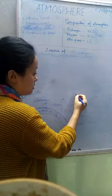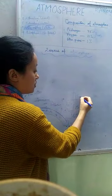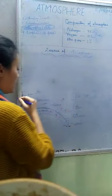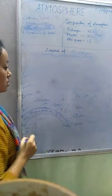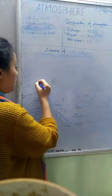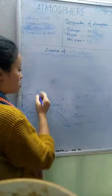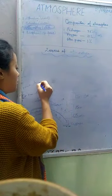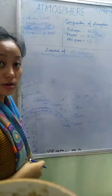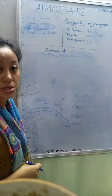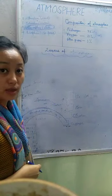Let us move to another layer that is ionosphere or thermosphere. It extends from 80 to 400 kilometers. Ionosphere. So ionization. Ionization of molecules and atoms here occur and this is due to the result of UV, X-ray and gamma radiation.